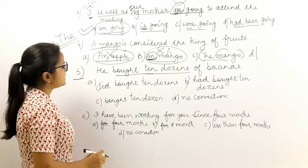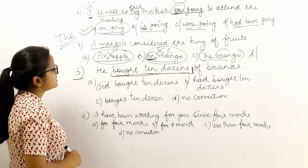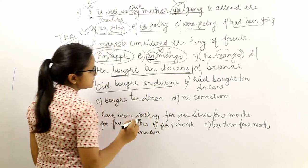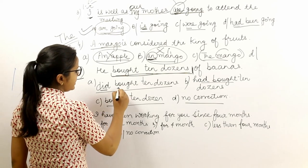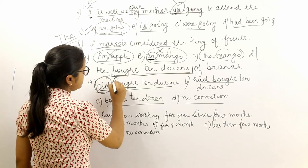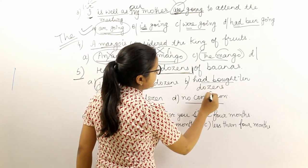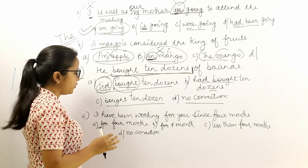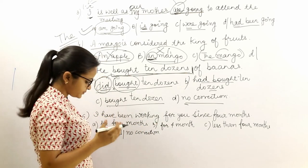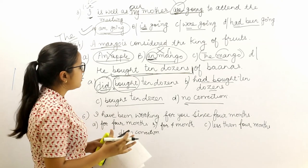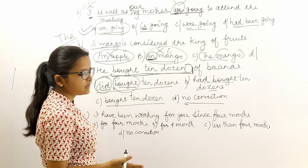The fifth sentence: 'He bought ten dozens of bananas.' Options: did bought ten dozens, had bought ten dozens, bought ten dozen, no correction. 'Did bought' is incorrect because you can't use two similar verb forms together. 'Had bought ten dozens' changes the tense unnecessarily. Words like dozen, kilo, pair, million, and thousand are always used in singular form — we do not use their plural forms. The correct answer is 'bought ten dozen.'